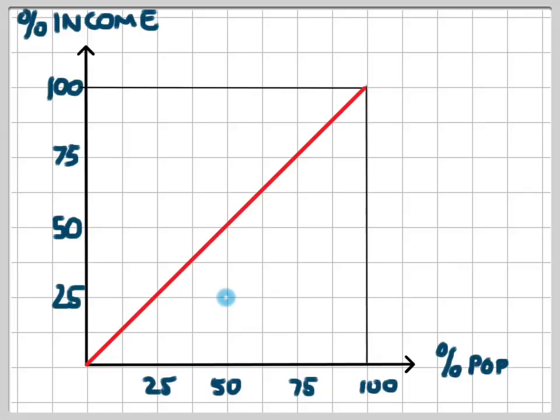And if the richest 10% earned 75% of the income, we would be at a point here. We could continue to graph these points along the entire curve, and then we would draw in a curve. So this is what the Lorenz curve for this economy would end up looking like.